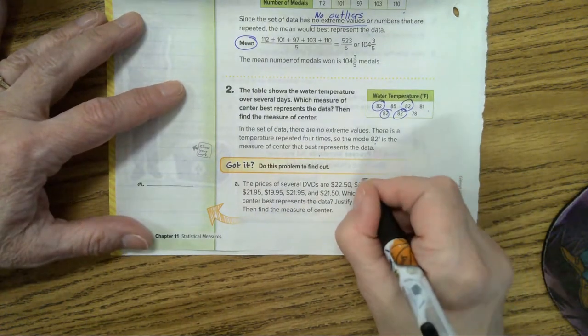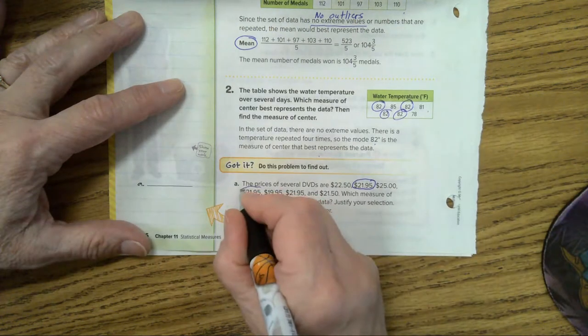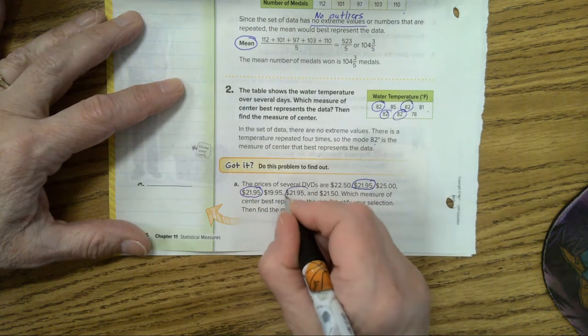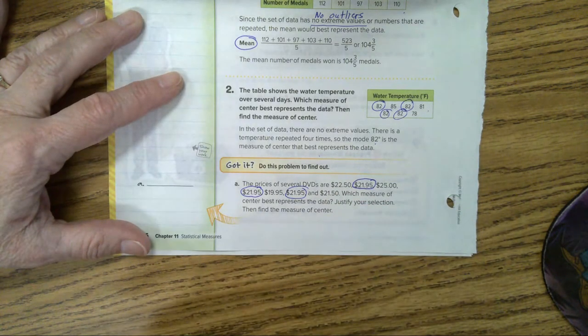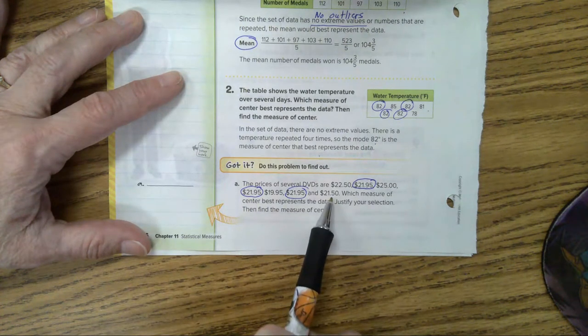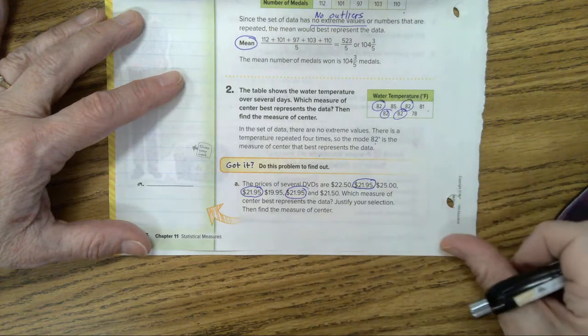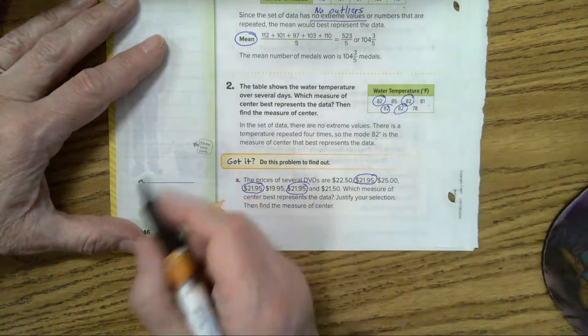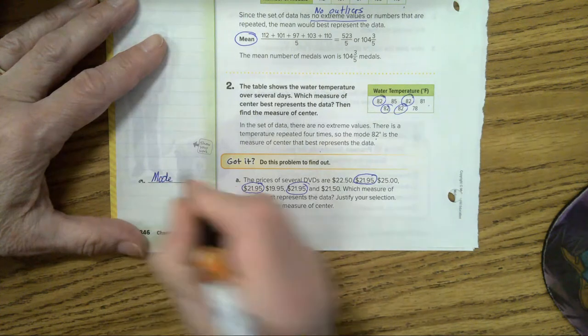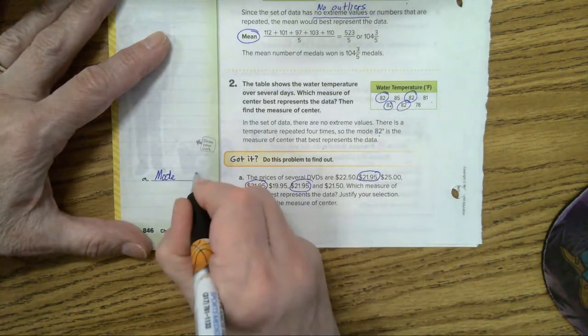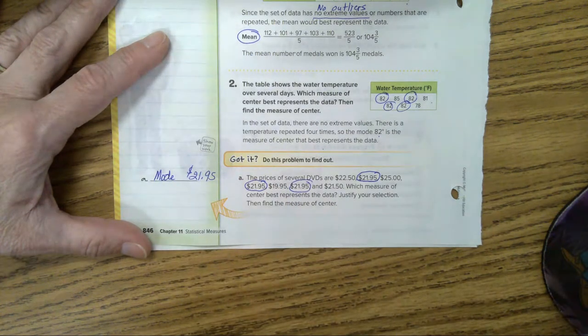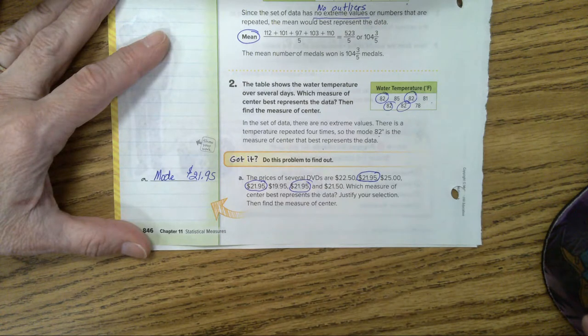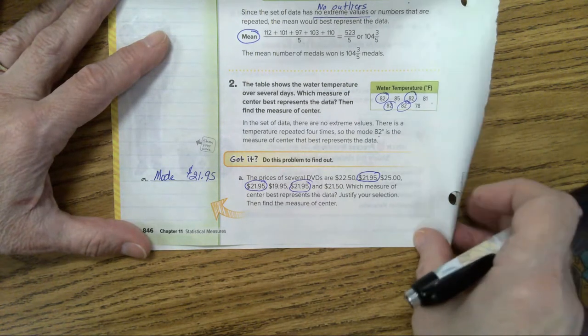Because look at this. One. Two. Three. You have three that are exactly the same. And that's about half of our data, isn't it? This one is almost the same as that two. On this one, we're going to use the mode. Mode. And it's $21.95. Okay. Any questions on that? All right. The mode is a lot faster to do than the mean, isn't it? Okay. Let's go to 847.